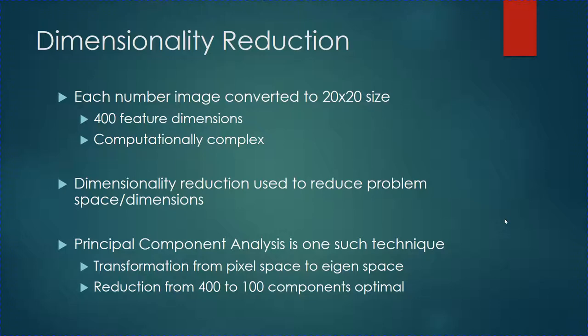After extracting and preprocessing the number, we move on to the optical character recognition stage. This stage involves the primary pattern recognition techniques: dimensionality reduction, feature extraction, and classification. The obtained digit images are converted to a standard 20×20 size, meaning each digit image has 400 feature dimensions. This number of dimensions can be reduced using dimensionality reduction to improve computation speed.